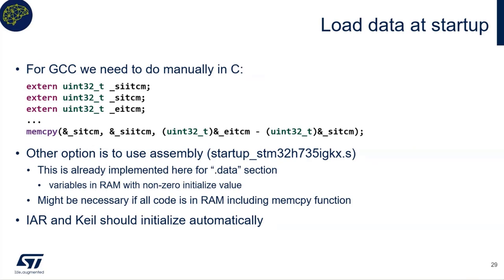In some cases this initialization in main might be too late — for example, if we want to place the main function itself in ITCM, we need to initialize the memory earlier. One option is to initialize it in the startup file, which is written in assembly. There is already similar code in the startup file that handles data initialization, so you can copy-paste it and replace the addresses. For IAR and Keil toolchains, this is done automatically by the compiler's initialization function called at startup.